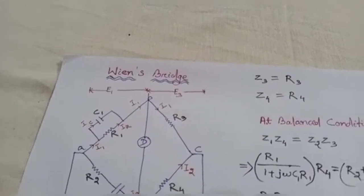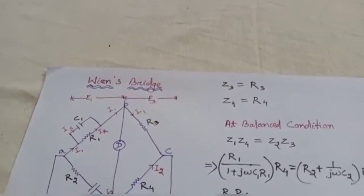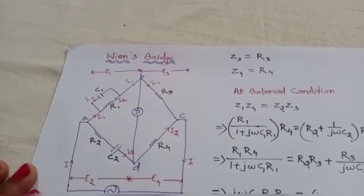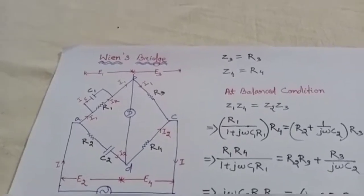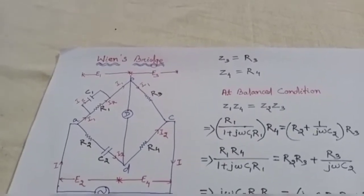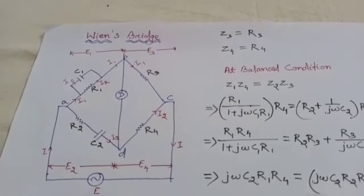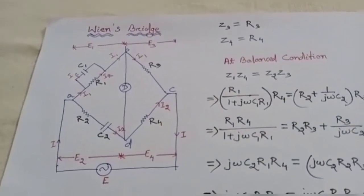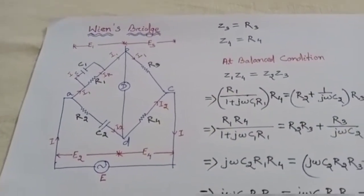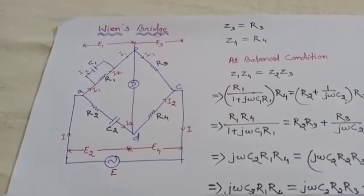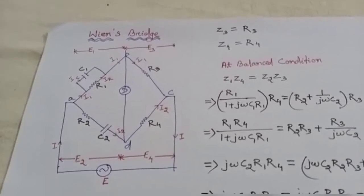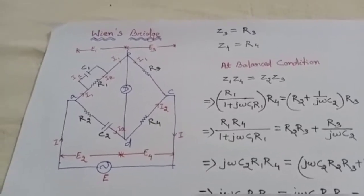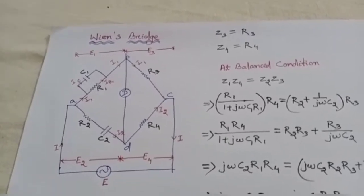Hello everyone, today we will discuss Wien's Bridge. This bridge is basically a frequency measuring bridge. It may be employed in a harmonic distortion analyzer where it is used as a notch filter, discriminating against one specific frequency. It can also be used in oscillator circuits to determine the frequency.